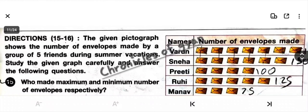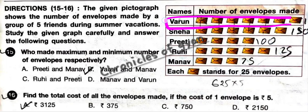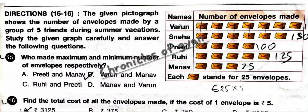Question 15: The given pictograph shows the number of envelopes made by a group of 5 friends during summer vacation. Who made the maximum and minimum number of envelopes respectively? The maximum is clearly Varun with 7 envelopes, and the minimum is Manav with 3 envelopes. The answer is option B: Varun and Manav.